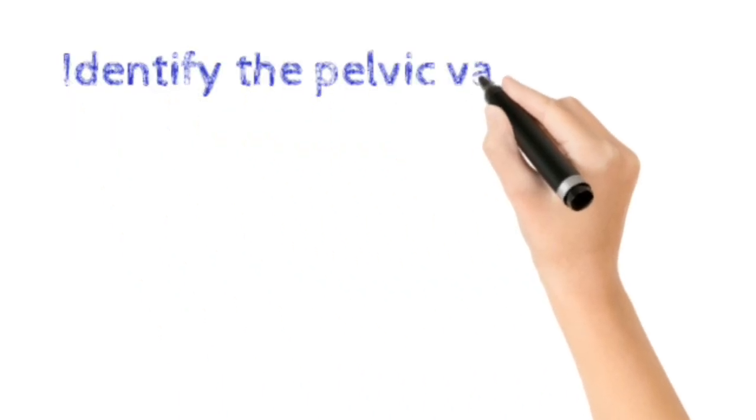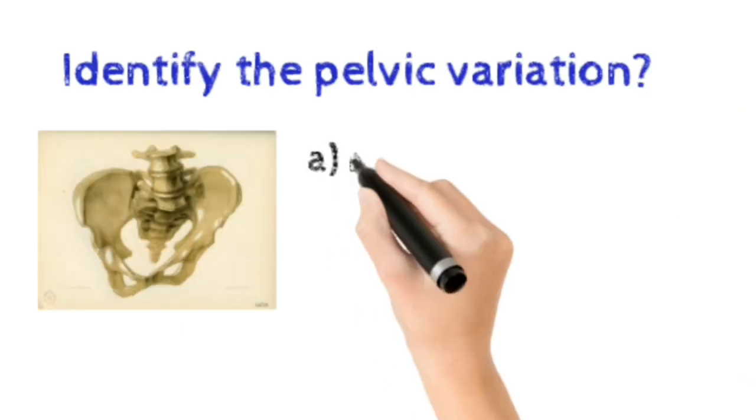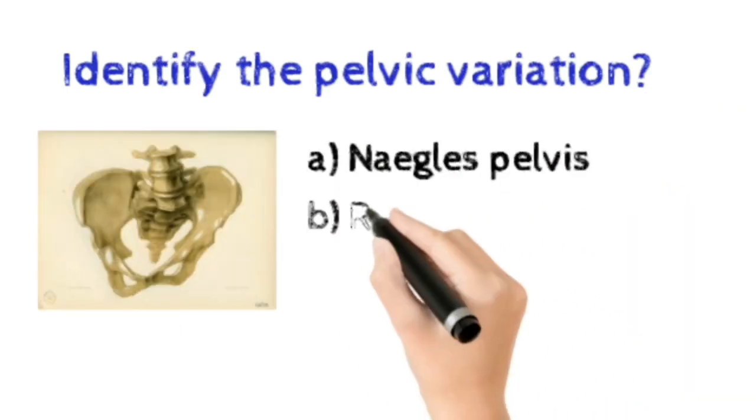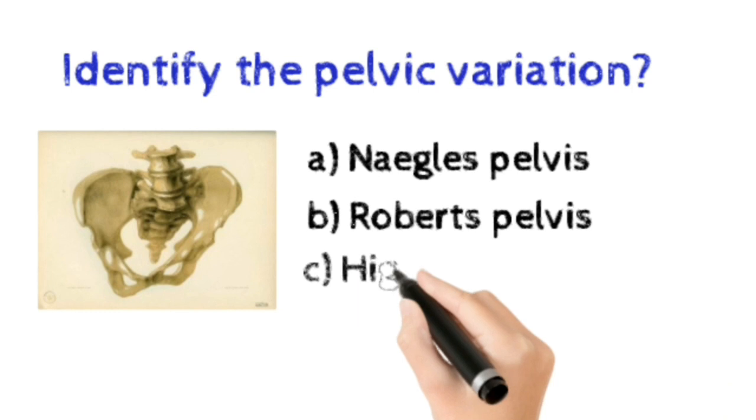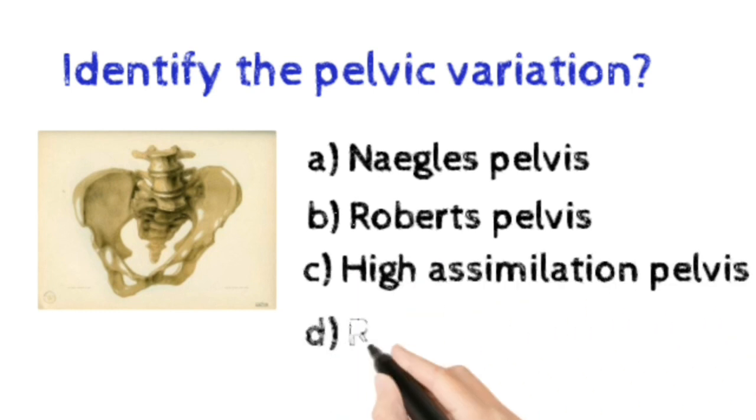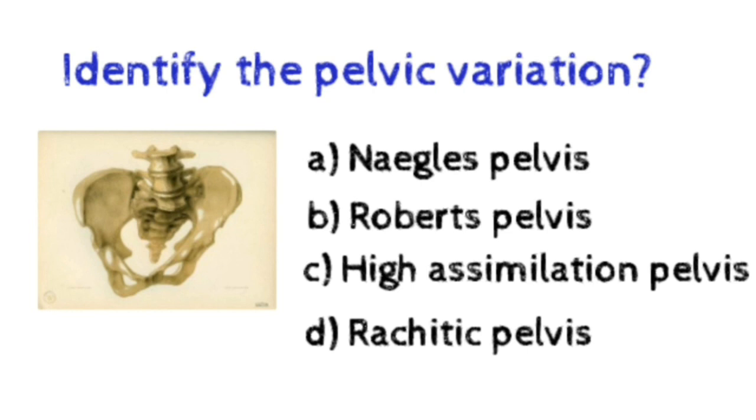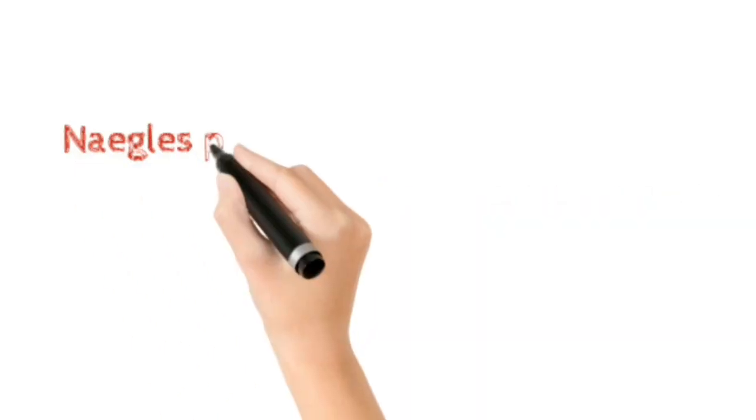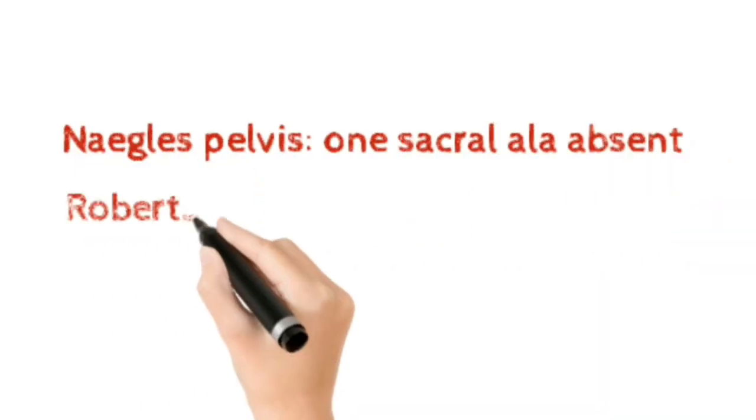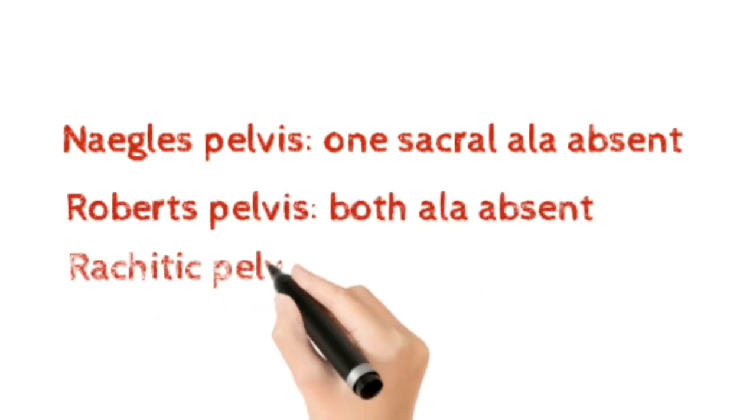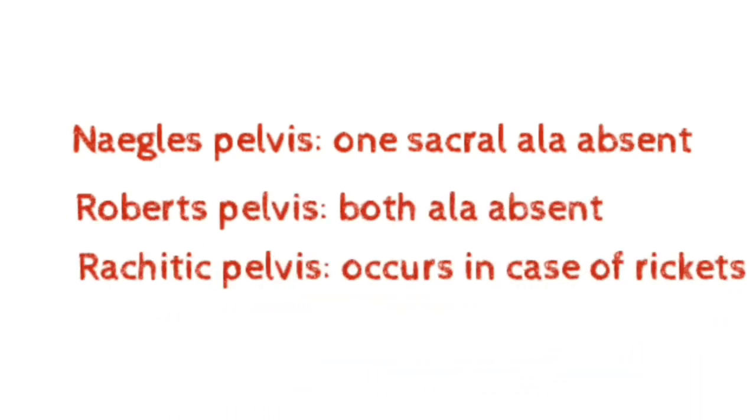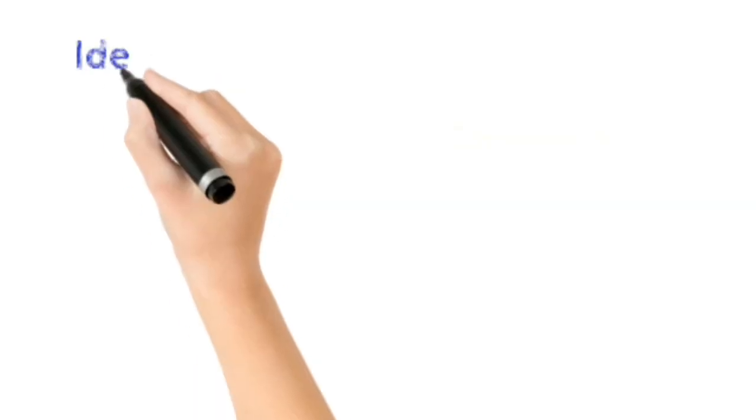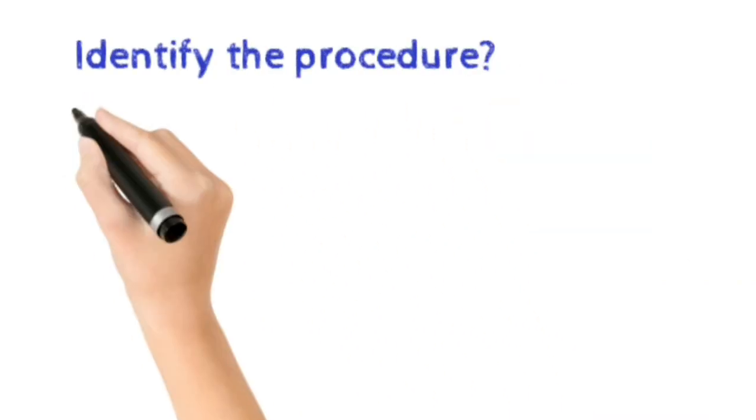Number nine: identify the pelvic variation from the image. Option A: Naegele's pelvis, Option B: Robert's pelvis, Option C: High assimilation pelvis, Option D: Rachitic pelvis. The correct answer is Option A, Naegele's pelvis. Naegele's pelvis is a developmental defect in which one sacral ala will be absent.